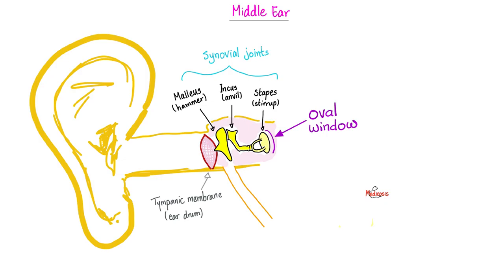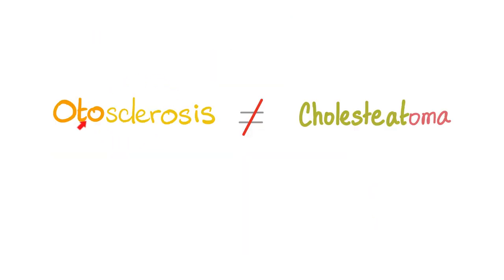So what does otosclerosis mean? 'Oto' means ear, 'sclerosis' means hardening, because 'scleros' means rock. We have abnormal bone deposition at the rim of the oval window near the foot plate of the stapes. Do not confuse otosclerosis — today's topic — with cholesteatoma, which was the last video's topic. Otosclerosis is hardening and bone deposition in the middle ear, particularly the foot process of the stapes and the oval window.